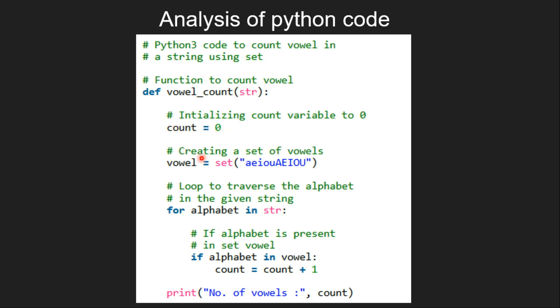Then we create a set of vowels using set method like this. Then inside the for loop, we scan each alphabet in string whether it is present in set vowel or not. If it is present, then we increment count by 1. Then finally we print the number of vowels.